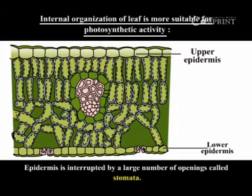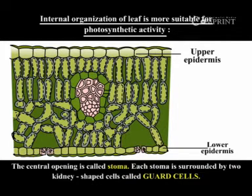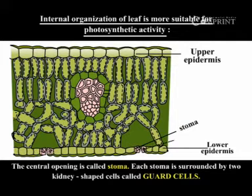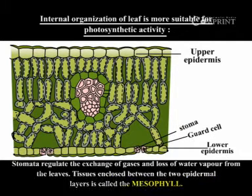Epidermis is interrupted by a large number of openings called stomata. The central opening is called a stoma. Each stoma is surrounded by two kidney-shaped cells called guard cells. Stomata regulate the exchange of gases and loss of water vapor from the leaves.